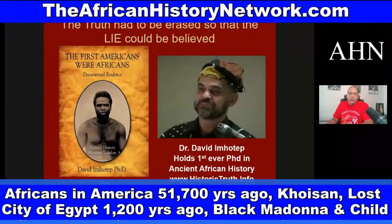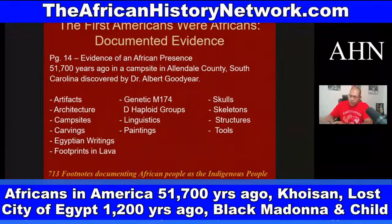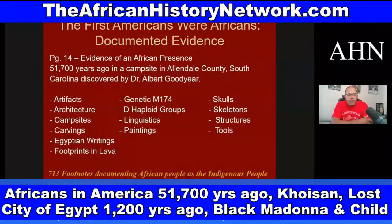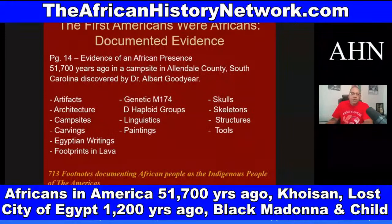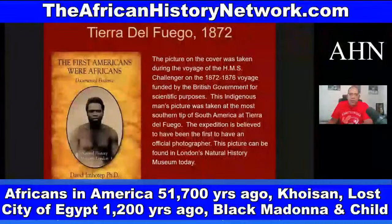This is Dr. David M. Hotel, who wrote the book The First Americans Were Africans: Documented Evidence. His book has 713 footnotes and deals with thousands of years of history. On page 14, it covers the discovery made in 2004 in Allendale County, South Carolina, by Dr. Albert Goodyear. He discovered 13 different types of evidence that fairly document an African presence in this country going back at least 51,700 years ago — these were the Khoisan, who have the oldest DNA on the planet, coming from southern Africa, ancestors to the Igbo and the Twa.